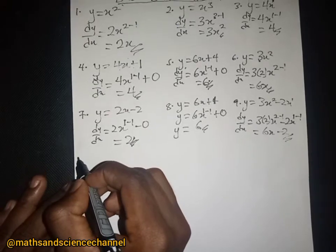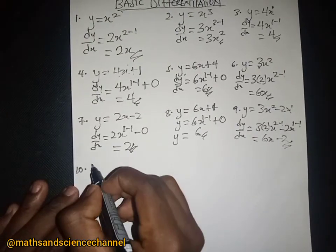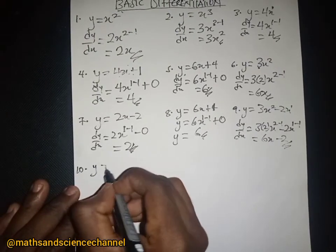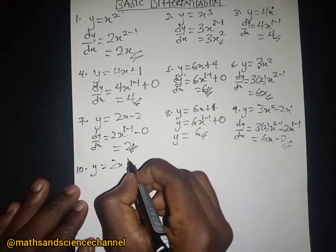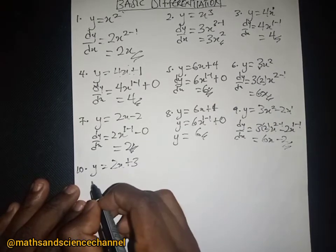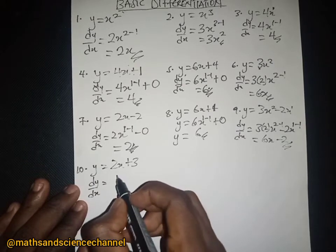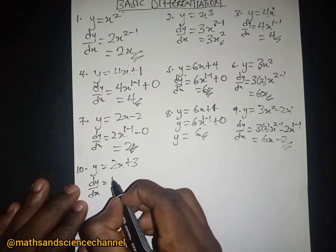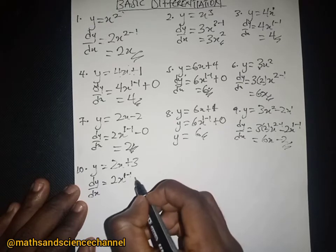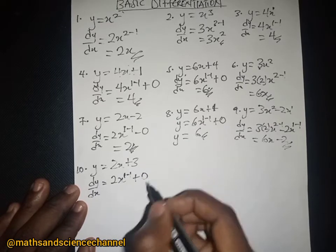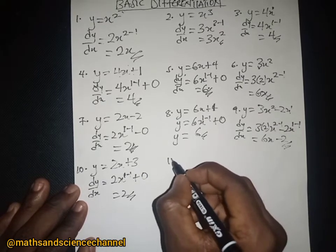Let's take y equal to 2x plus 3. The dy/dx will be equal to — we just have 2, subtract 1 from the exponent, differentiate the constant to get 0 — and we just have 2.